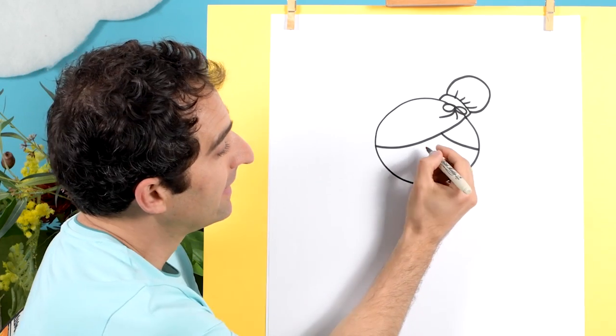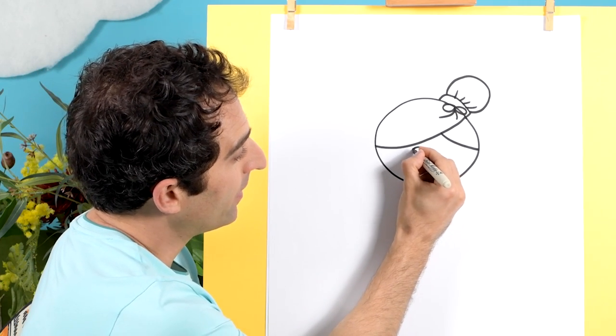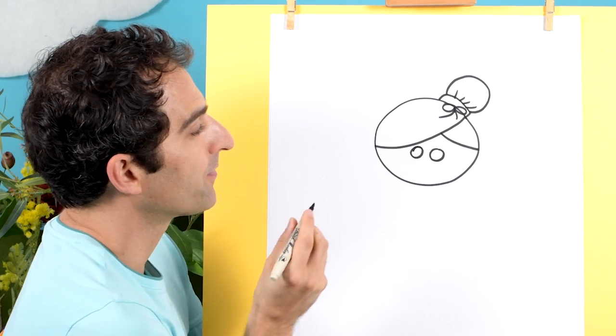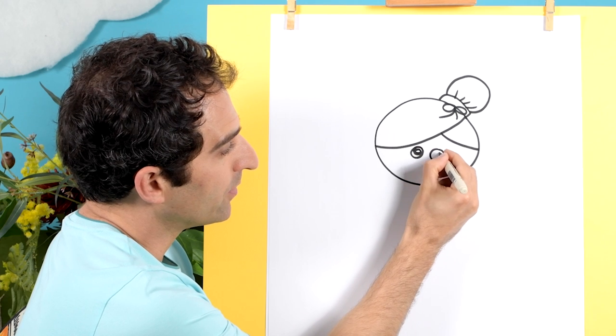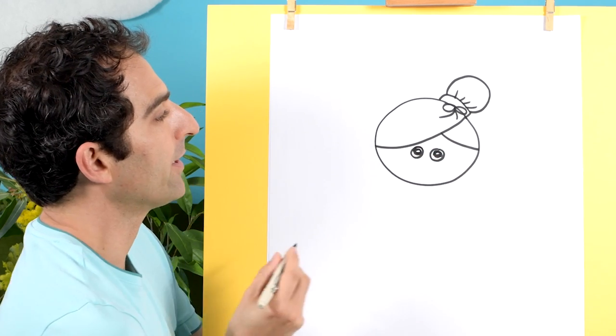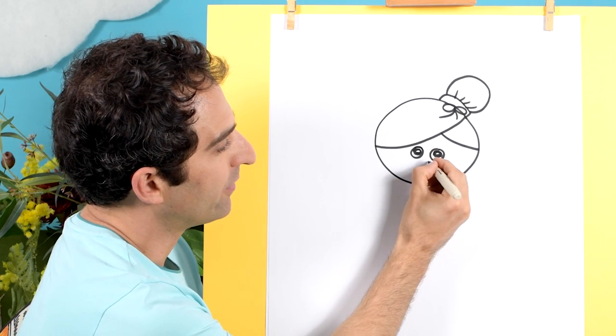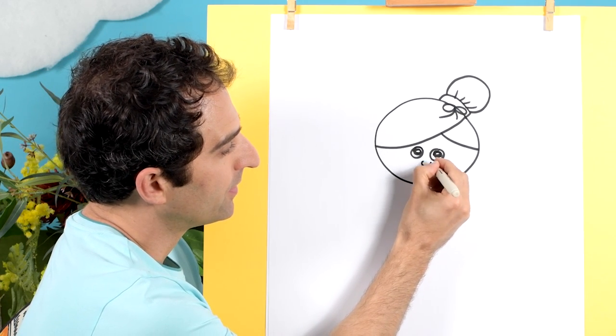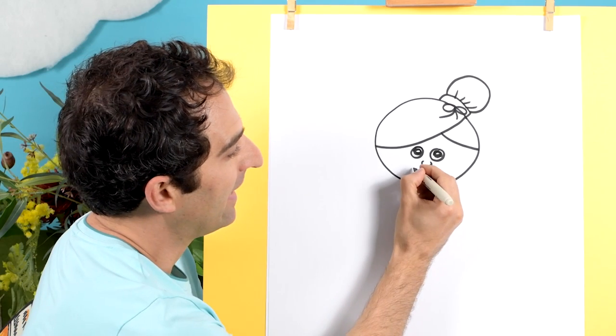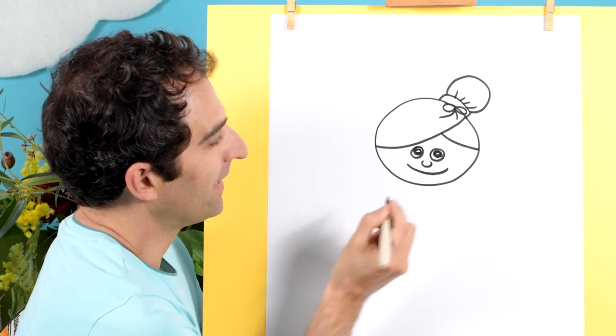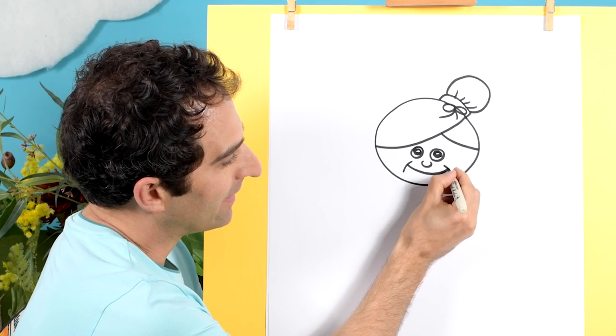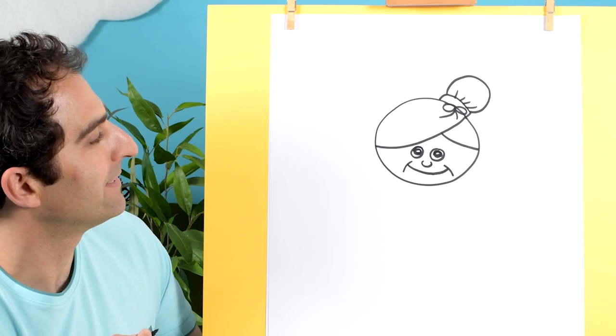Now some eyes. So we'll draw one eye here and another one here. And we can put our little black circles inside. There we go. And let's give her a little nose. Like that. And a big smile. There we go. And we can have a line here and a line here like that.